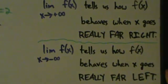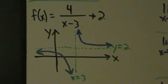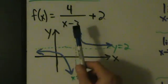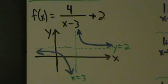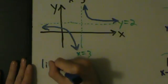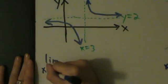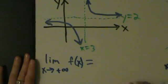Let's see a simple example of this — it's pretty straightforward with the graph. If we look at this function f of x, we have 4 divided by (x minus 3) plus 2. This function has a vertical asymptote at x equals 3 and a horizontal asymptote at y equals 2. Let's go ahead and take the limits at positive and negative infinity — so the limit as x approaches positive infinity of f of x.